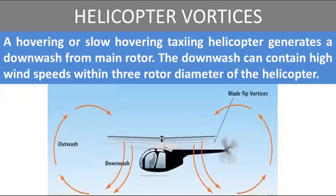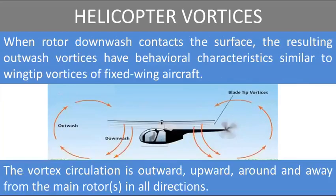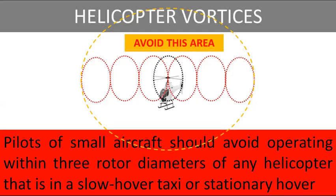Helicopters also generate wake vortices. A hovering or slow-taxiing helicopter generates a downwash from the main rotor, which can contain high wind speeds within three rotor diameters of the helicopter. When rotor downwash contacts the surface, the resulting outwash vortices have behavioral characteristics similar to wing tip vortices of fixed-wing aircraft. The vortex circulation is outward, upward, around, and away from the main rotor in all directions. Pilots of small aircraft should avoid operating within three rotor diameters of any helicopter in a slow hover taxi or stationary hover.